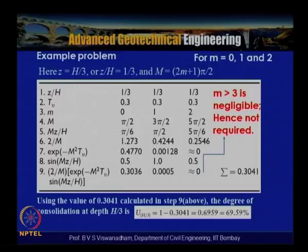The solution is tabulated for different values of m. For m = 0: M = π/2; for m = 1: M = 3π/2; for m = 2: M = 5π/2. With z/h = 1/3 and Tv = 0.3, the quantities Mz/h, sin(Mz/h), 2/M, and exp(−M²Tv) are computed for each term. We check where the series converges — for m > 3 the contribution becomes negligible.